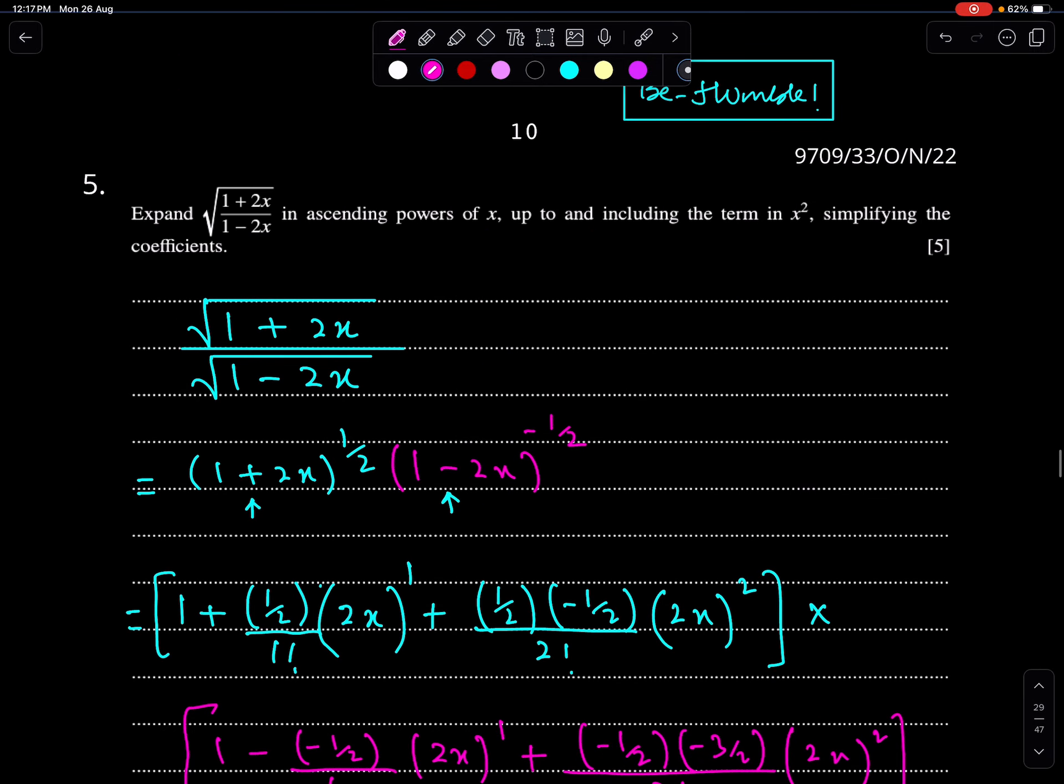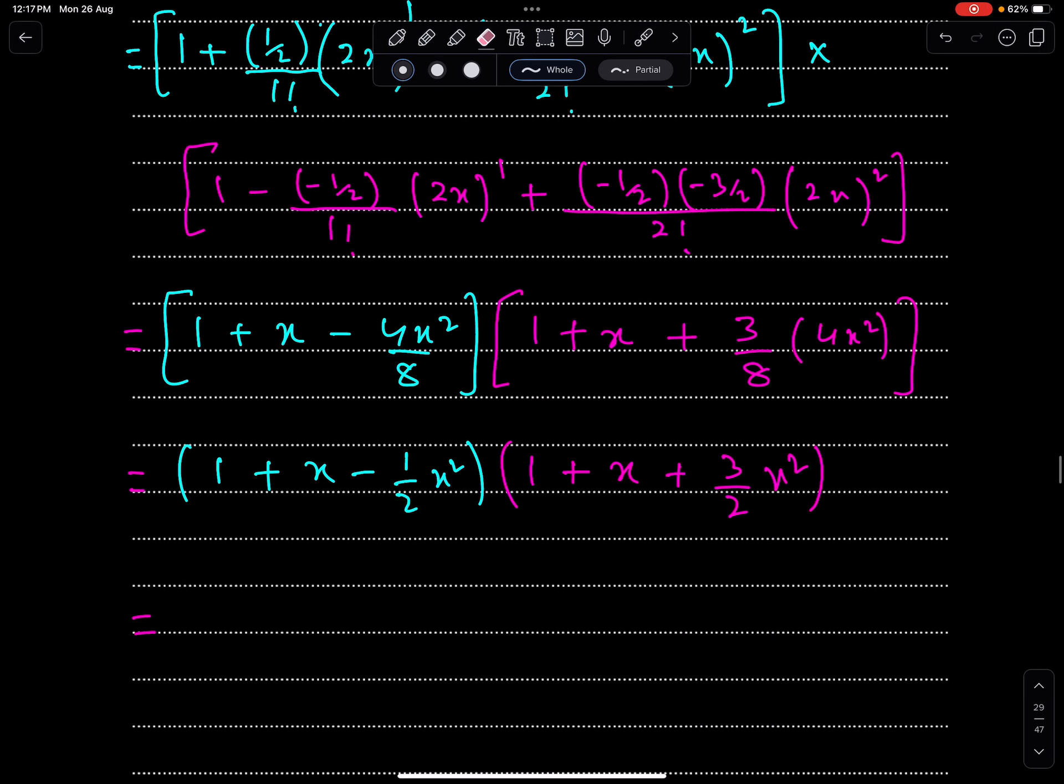Now we have to expand this expression up to and including the term in x squared. So we have to multiply this 1 with everything, with this whole expansion. So we will get 1 plus x plus 3/2 x squared.